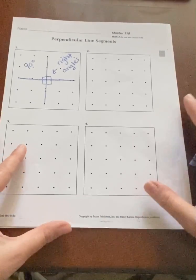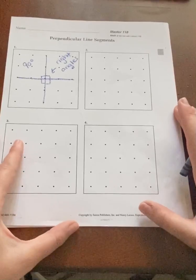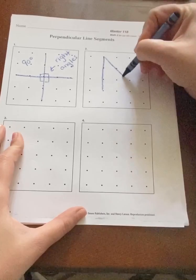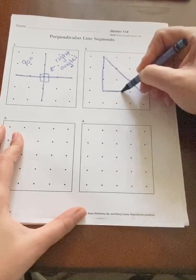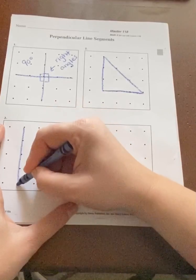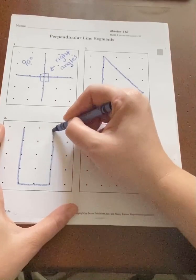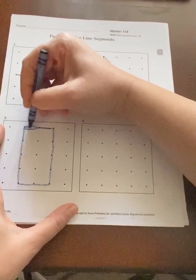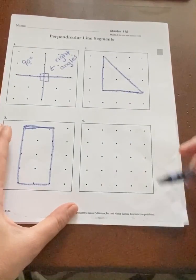Alright, so now we're gonna be drawing some shapes and we're gonna find the perpendicular lines in them. So the first shape we're gonna draw is a triangle. The next shape is a rectangle. Oops, that's not very straight. And then the last one is a square.